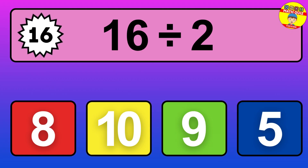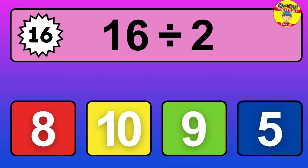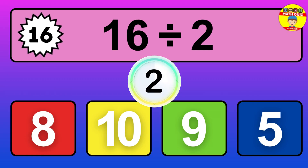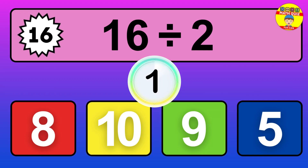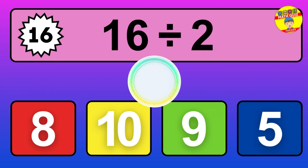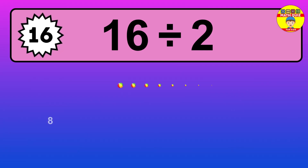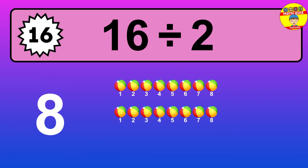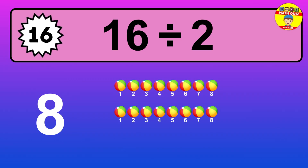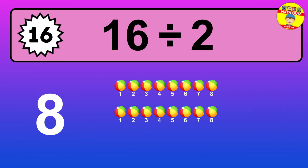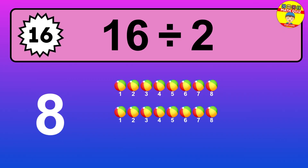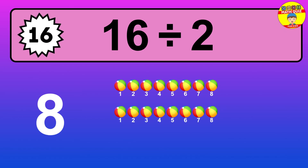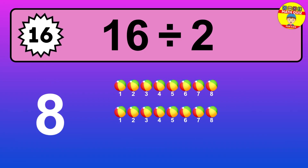16 divided by 2 — it's time to think. Let's go to the solution. Divide the number 16 by 2. Each group contains 2 units, so dividing 16 by 2 results in 8 equal groups. Thus, the result is 16 divided by 2 equals 8.